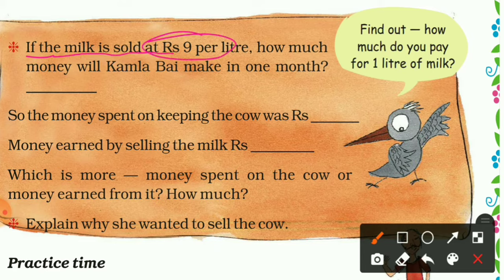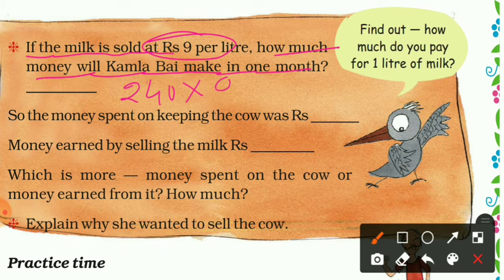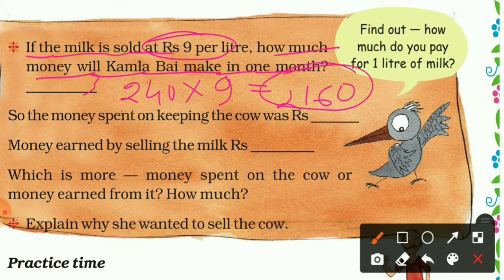If the milk is sold at 9 rupees per liter, how much money will Kamala Bai make in one month? In one month the production of milk was 240 liters and the cost of one liter is 9 rupees, so we multiply: 240 × 9. 9 × 0 = 0, 9 × 4 = 36 — write 6, carry 3; 9 × 2 = 18, plus 3 = 21. So Kamala Bai earns two thousand one hundred sixty rupees.